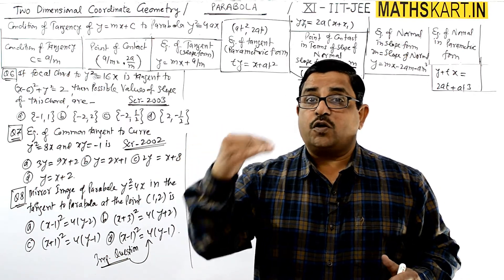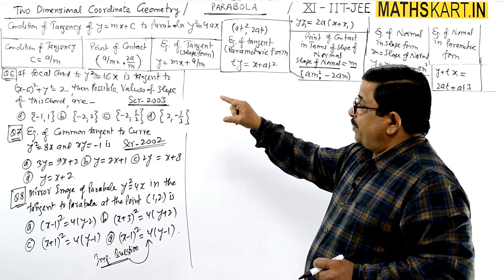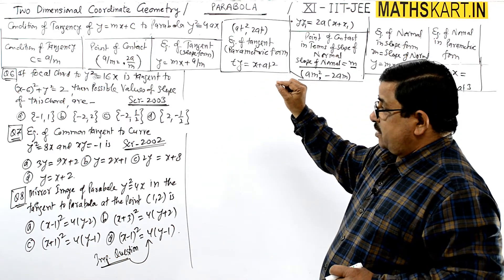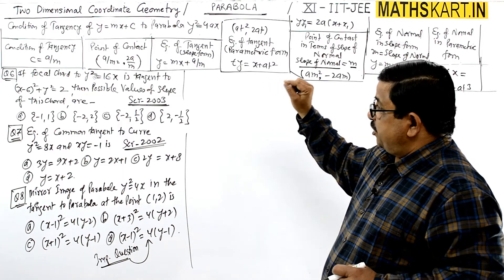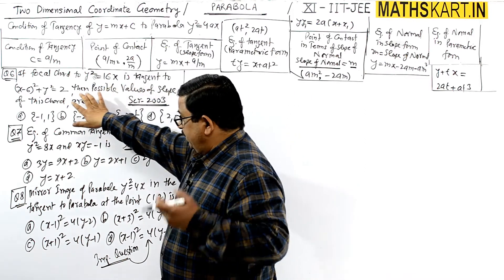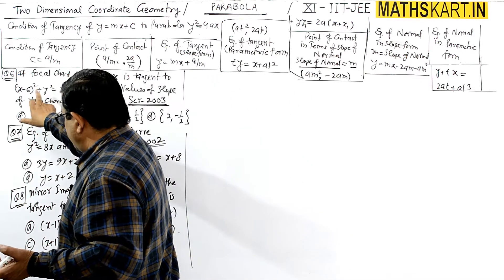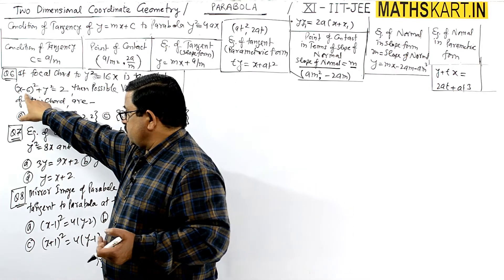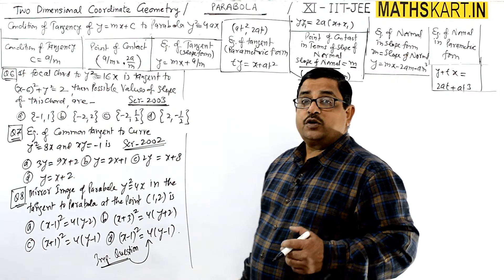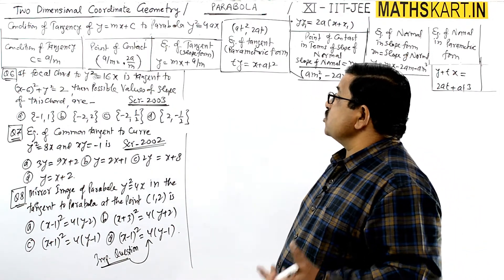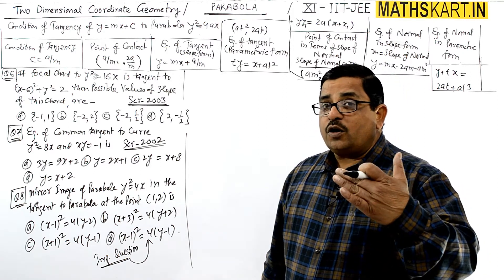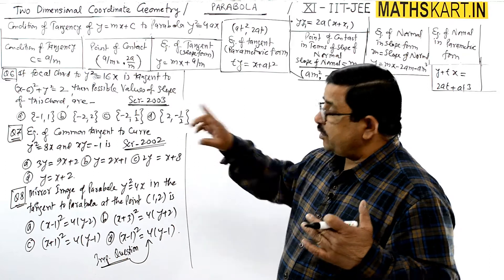Focal chord of the parabola y² = 16x. For this parabola, the focal chord is tangent to the circle. The circle has center at (6, 0) and radius √2. We need to find the possible values of the slope of this chord — the focal chord of the parabola that is tangent to this circle.